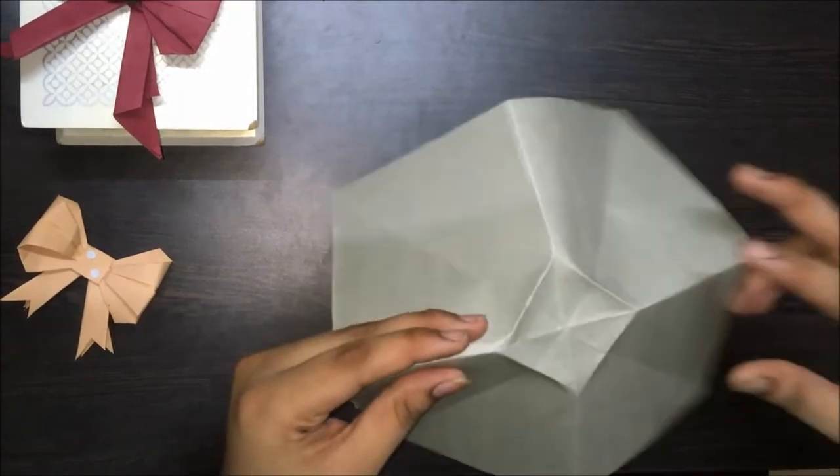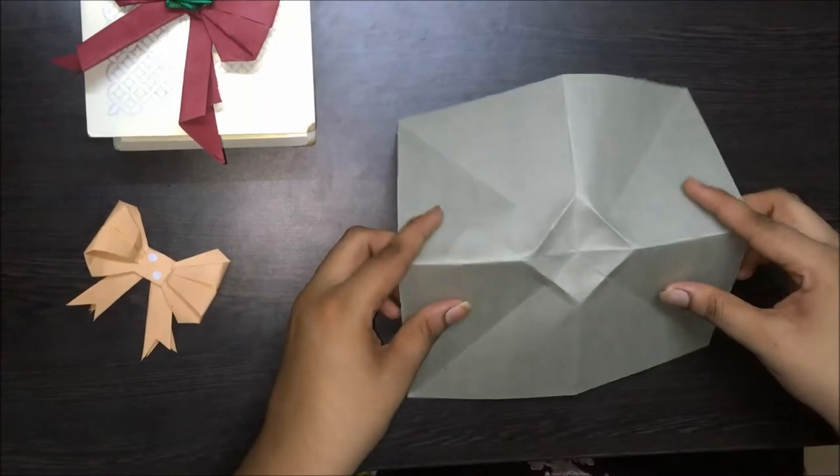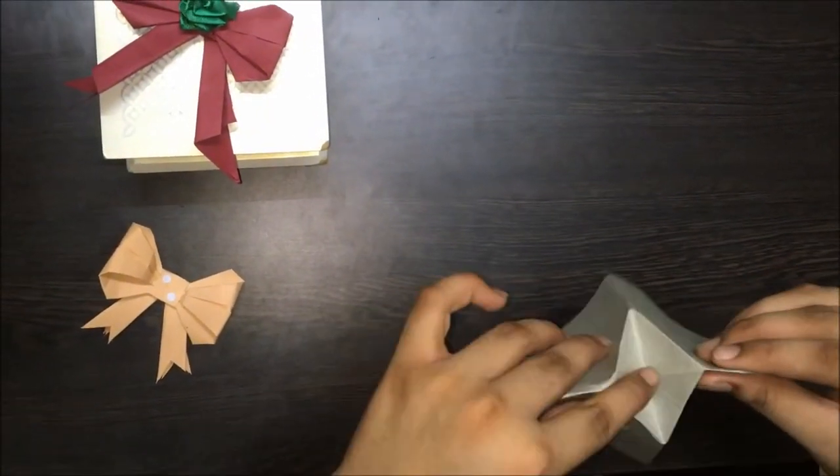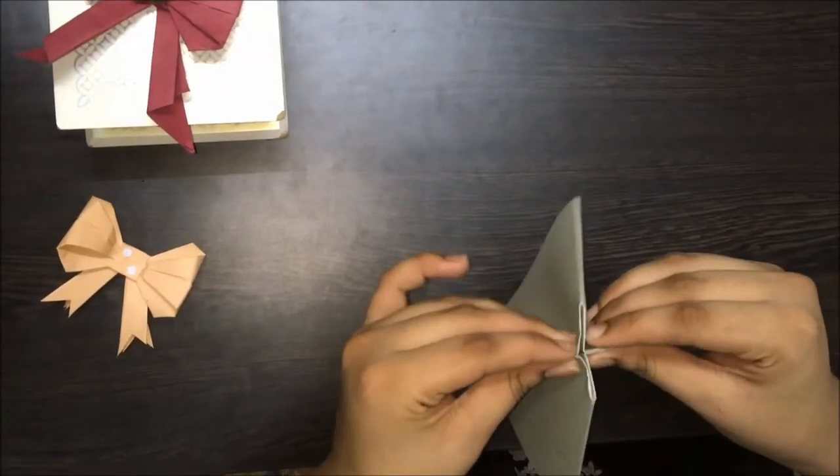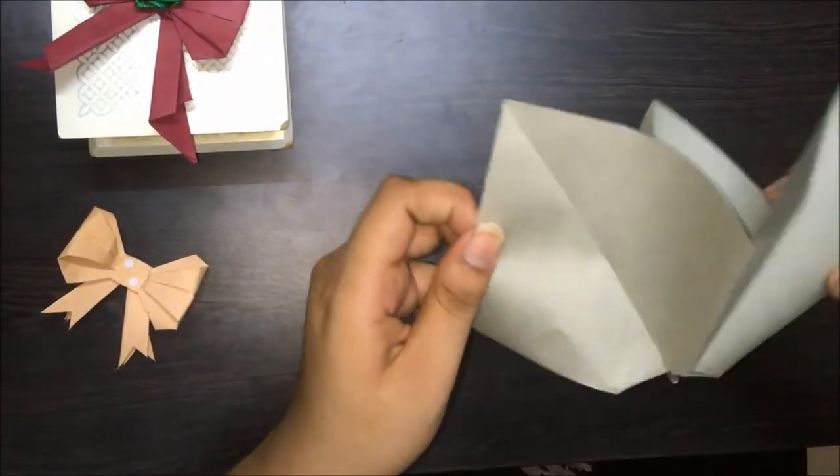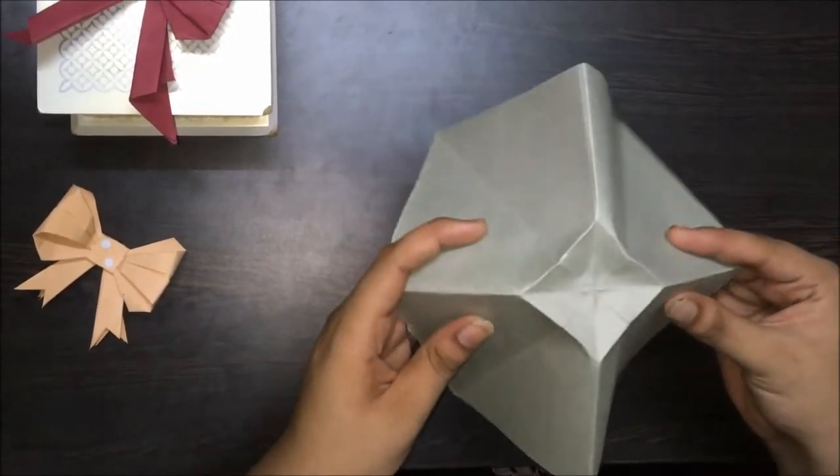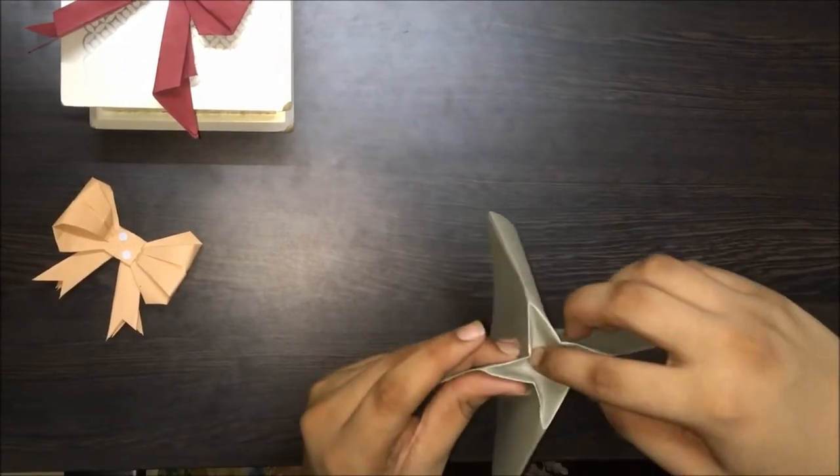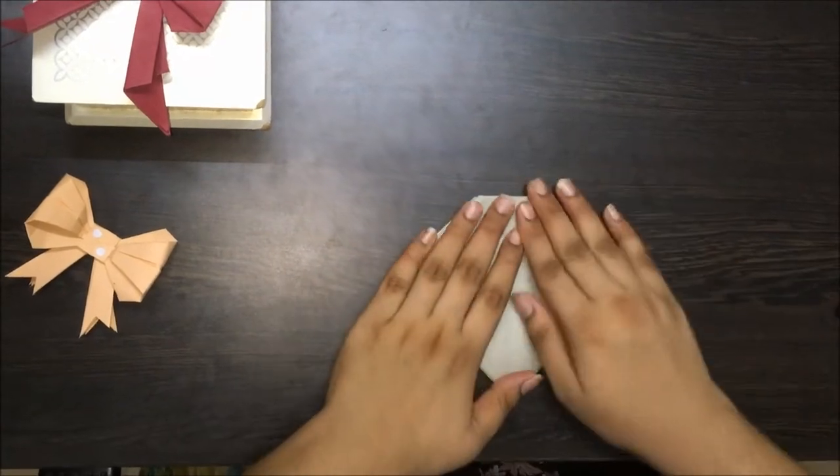So now catch hold of any two of the sides. Either this or this. And fold it like this. That is, open the paper up. Pick these two sides. Push them down and put a finger in the middle and just close this. Now let's put it this way.